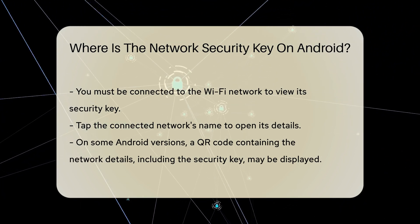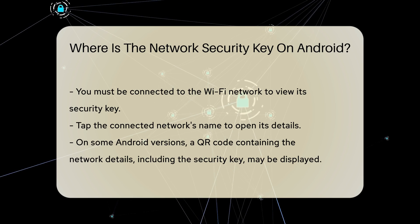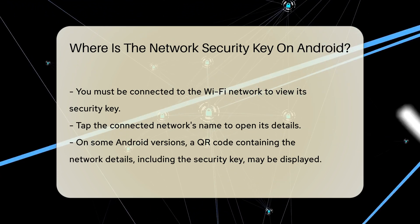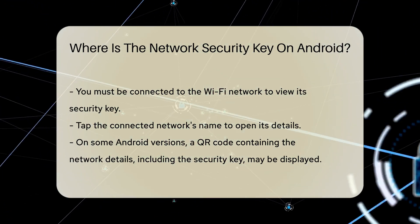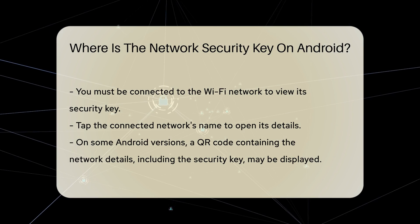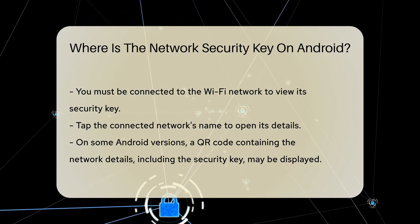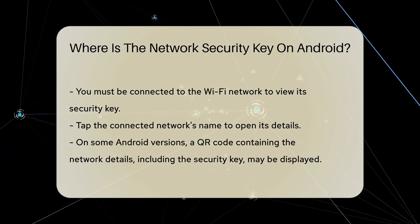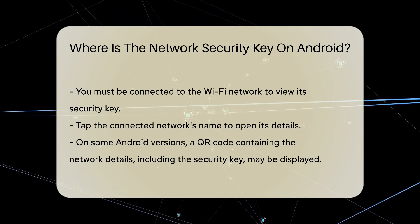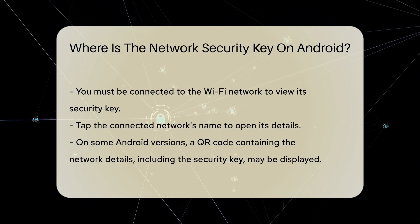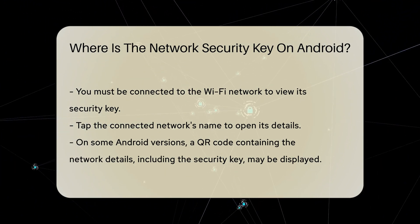On some Android versions, you might see a QR code. This QR code contains the network details, including the security key. To extract the network security key from the QR code, you can use another device with a QR code scanner. Simply scan the QR code and the network details, including the security key, will be displayed on the scanning device.